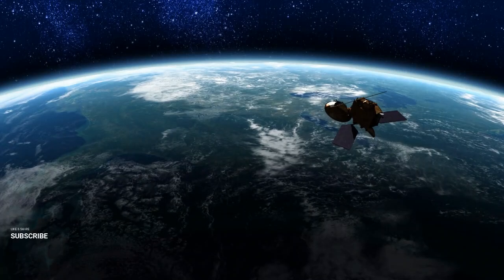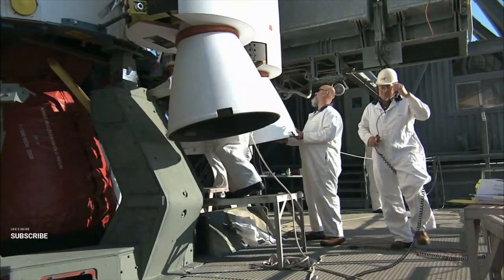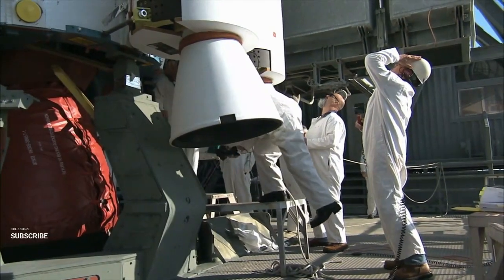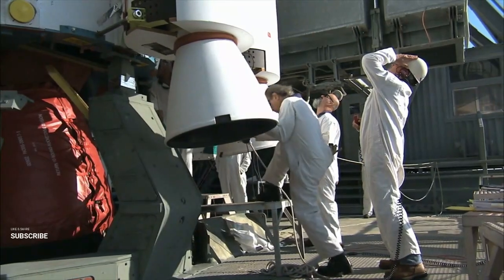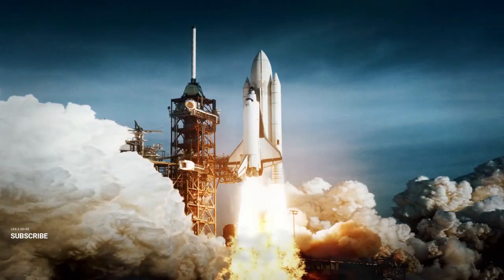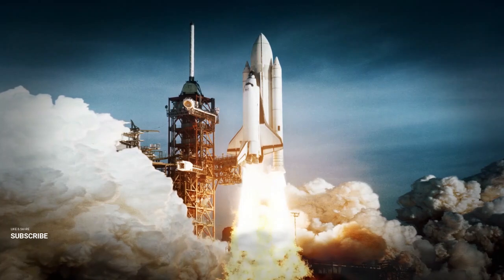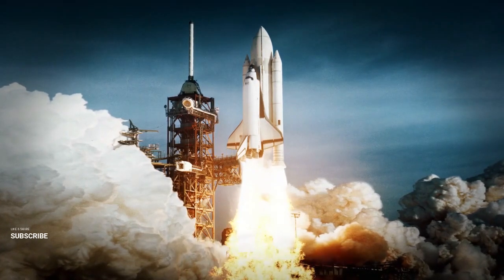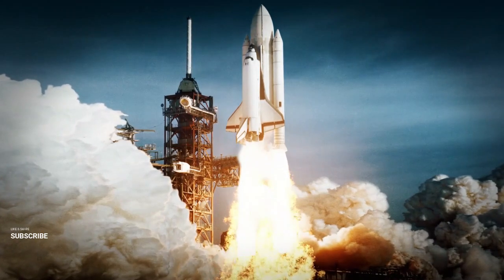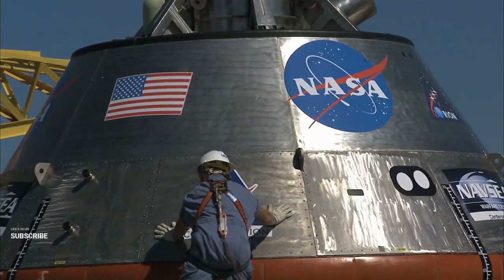Building infrastructure on the moon presents unique challenges. The harsh environment requires innovative construction techniques. The magnetic moon launcher could support these efforts by transporting building materials and prefabricated modules to the lunar surface. Advanced construction methods, such as 3D printing with lunar regolith or using robotic systems, could be employed to create habitats and research facilities. The launcher's ability to efficiently move materials could accelerate the development of a sustainable lunar base, setting the stage for long-term human presence on the moon.